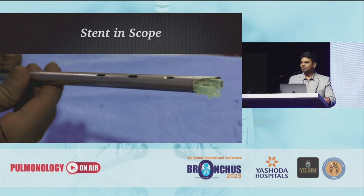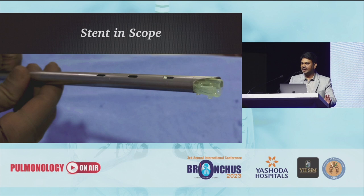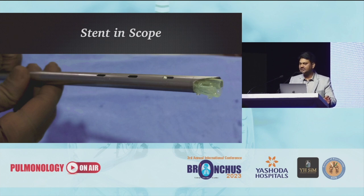So what is stent in scope? Do we really need a stent applicator to load a stent? The concept behind stent in scope came to my mind when thinking about how we remove a deployed silicone stent from the airway. What we usually do is put in a rigid bronchoscope, go inside, catch the stent with a grasper, rotate the stent 360 degrees, and pull the stent into the bronchoscope — that is how we do stent removal. So if we can remove the stent without any applicator, why can't we place the stent without an applicator? This struck me, and we started loading stents into the bronchoscope.